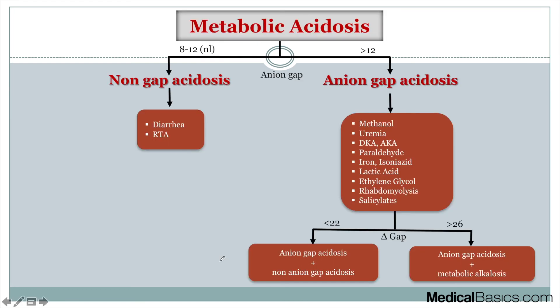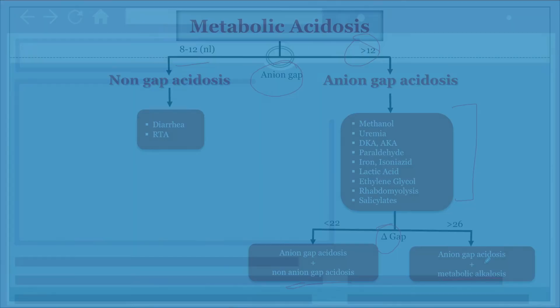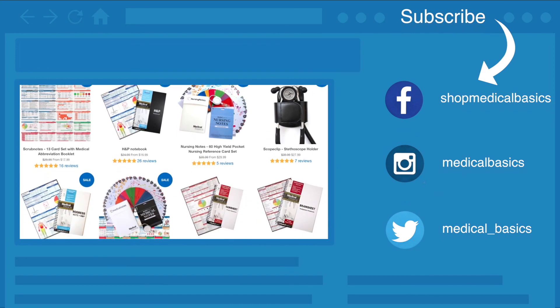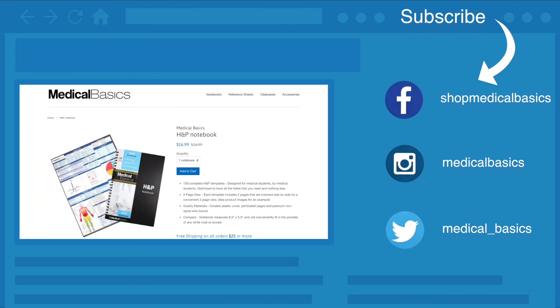To sum it all up: once we've determined it's a metabolic acidosis, we first calculate the anion gap — if normal, think diarrhea or RTA; if high, think MUDPILERS causes. Then, if there's a high anion gap, calculate the delta gap. A low delta gap means an additional non-anion gap acidosis is contributing. A high delta gap means a metabolic alkalosis is contributing additional bicarb. In the next video, I'll walk through an algorithm showing all the causes of metabolic acidosis, metabolic alkalosis, respiratory acidosis, and respiratory alkalosis. Be sure to check out medicalbasics.com for more educational resources, and don't forget to subscribe.